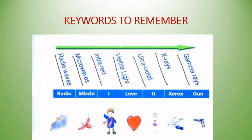Key words to remember: electromagnetic spectrum rays — radio waves, microwaves, infrared, visible light, ultraviolet, X-rays, and gamma rays.